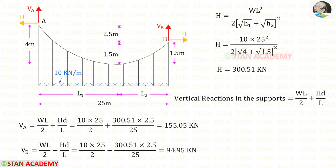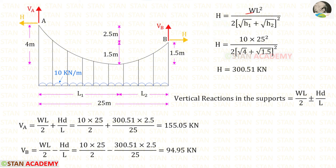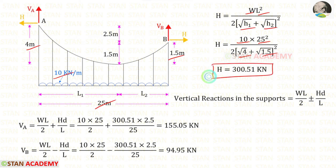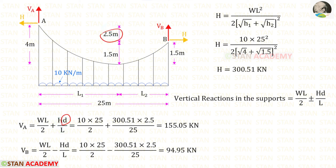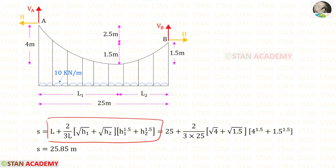Alternatively, we can use standard formulas to find the horizontal thrust and vertical reactions Va and Vb directly. To find the horizontal thrust, we apply the formula with W = 10, L = 25, h1 = 4, and h2 = 1.5. For the vertical reactions at the supports, support A is at the higher level so we select the positive sign in the formula; support B is at the lower level so we select the negative sign. D, the difference in level, is 2.5 m. We are getting slightly different answers because when we use the formulas the results are more accurate. We can also use this formula to find the length of the cable.